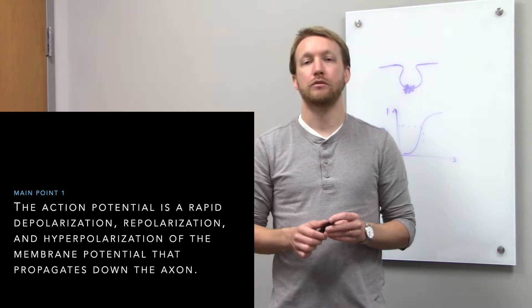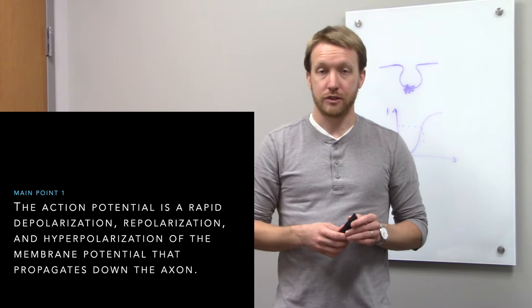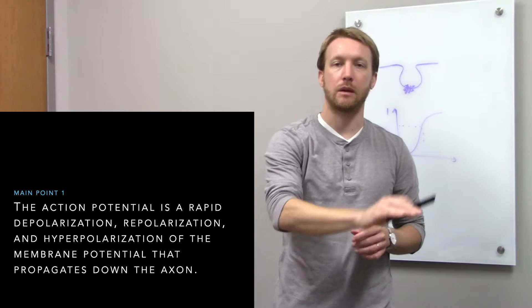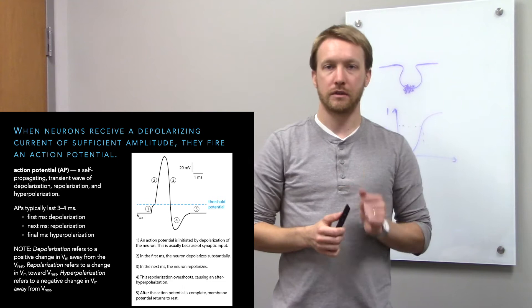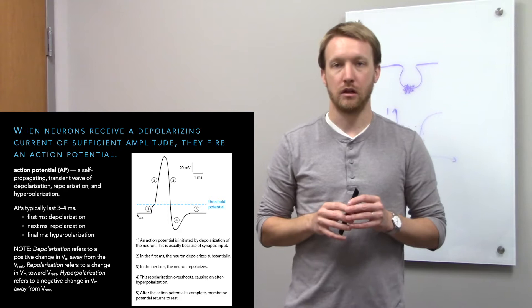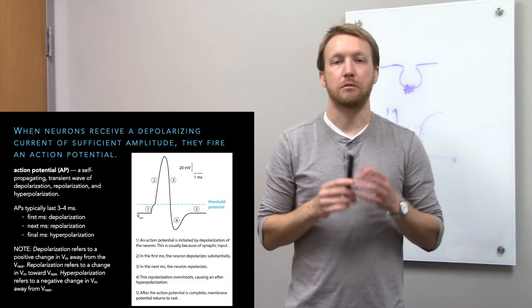We'll start by walking through an action potential. During an action potential, a neuron rapidly changes its membrane potential from the negative 70 millivolt resting value up to a positive, roughly 30 millivolt value, then back down, dipping a little in the after hyperpolarization before returning to rest. In the cartoon world it looks a little something like this. Once we hit threshold potential — the membrane potential at which we fire — we're off to the races.